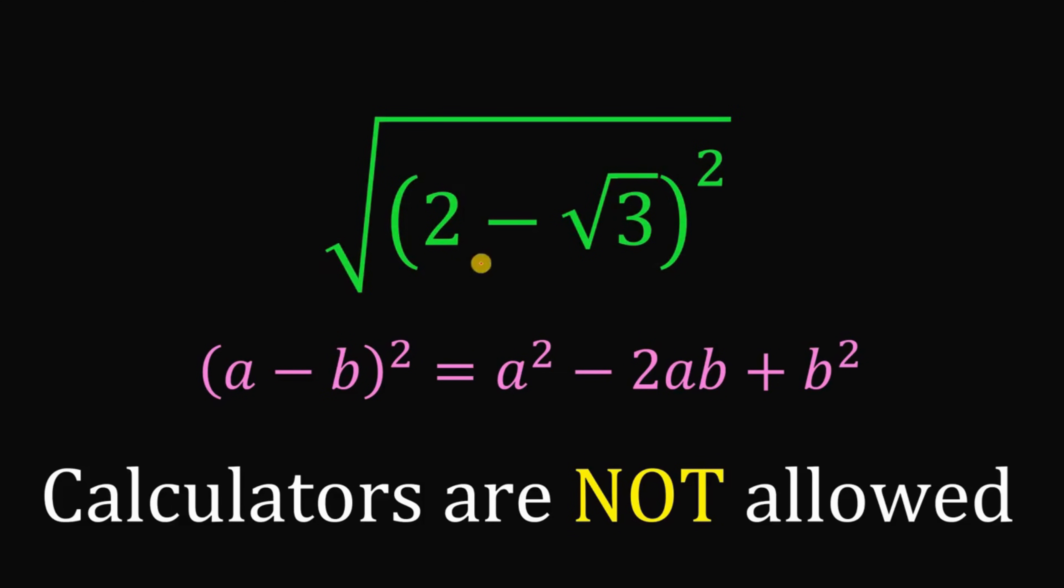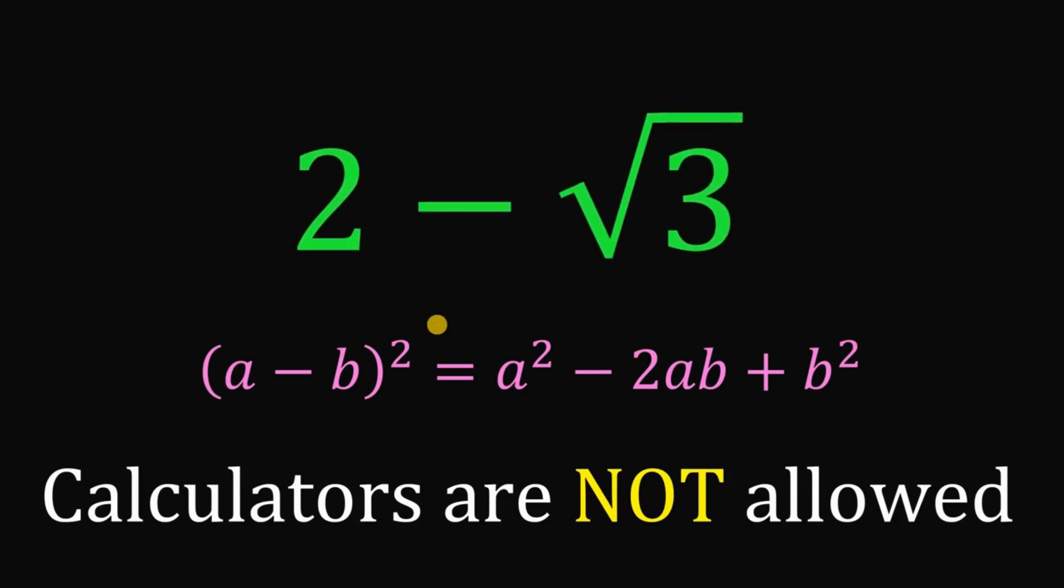So now, square root of quantity 2 minus square root of 3 quantity squared, we can now cancel out squared and square root. And also take note that 2 minus square root of 3 must be greater than 0, because 2 is greater than square root of 3. Therefore, this expression right here must be simplified to just 2 minus square root of 3. And that is our answer to this question.